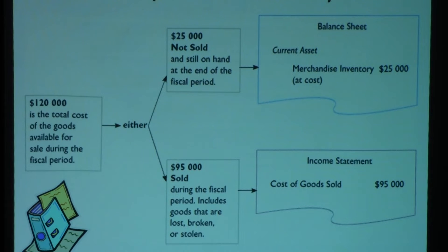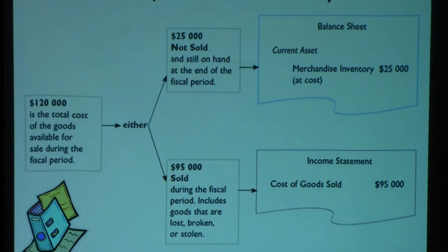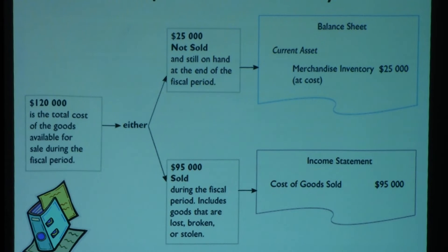Items that are sold become part of your income statement because they are considered cost of goods sold — it is an expense. Any item that is sold from inventory moves from your assets to expense, very similar to your adjusting entries with prepaid. These are your assets that move to expense because they are sold. If an item is not sold, it stays on the balance sheet as inventory.